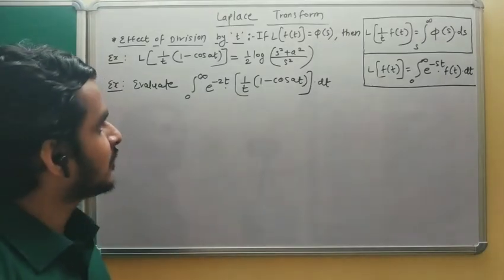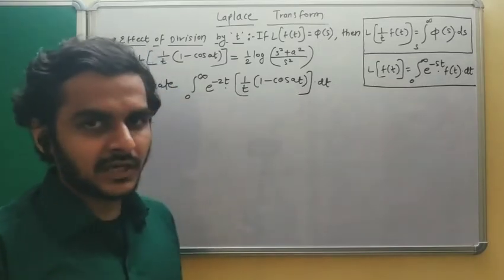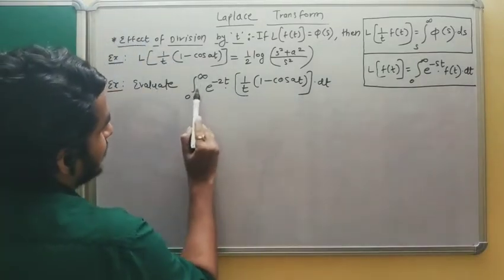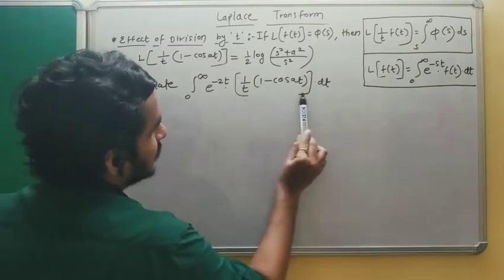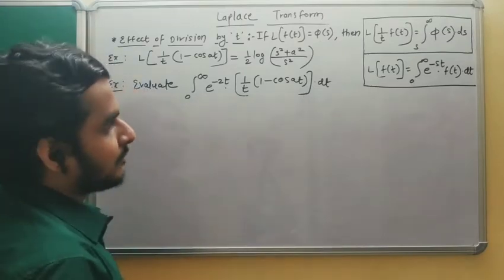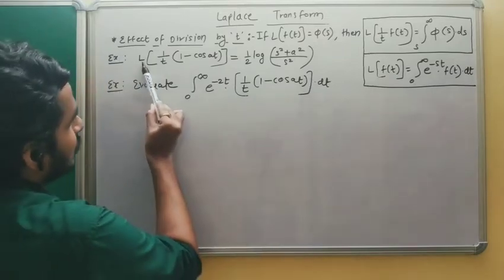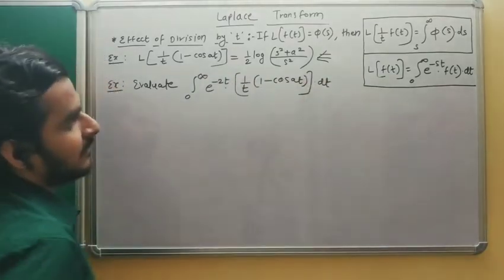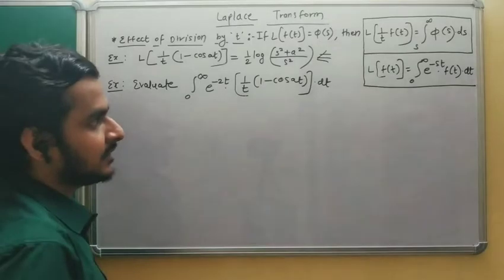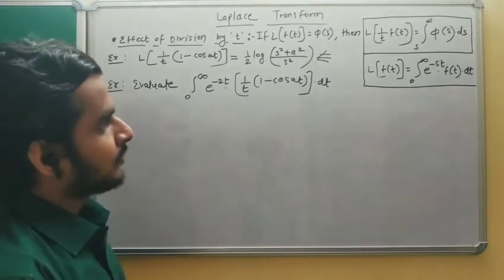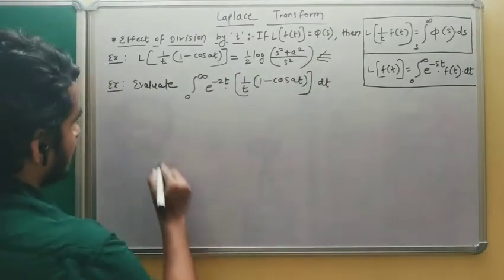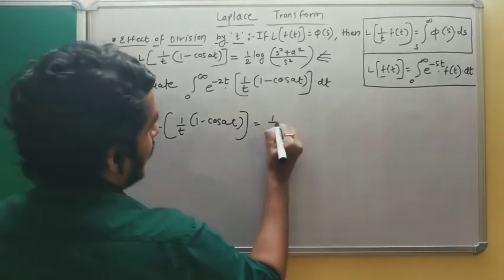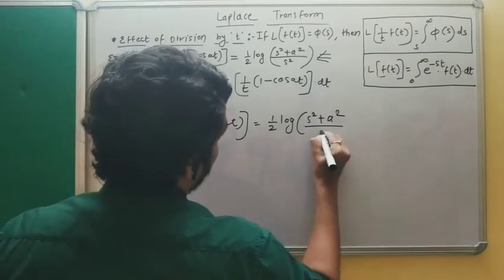From the previous numerical, the Laplace transform of (1/t)·(1 − cos(at)) is (1/2)·log((s² + a²)/s²). So L{(1/t)·(1 − cos(8t))} = (1/2)·log((s² + 8²)/s²). By the definition of Laplace transform: L{f(t)} = ∫₀^∞ e^(−st)·f(t) dt. So this integral equals ∫₀^∞ e^(−st)·(1/t)·(1 − cos(8t)) dt.